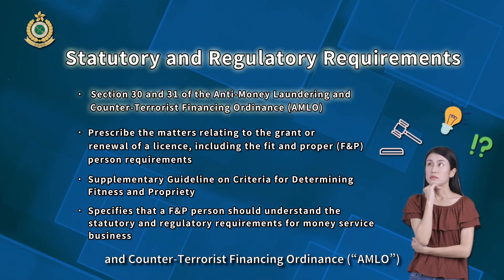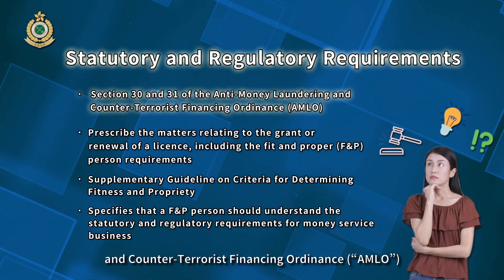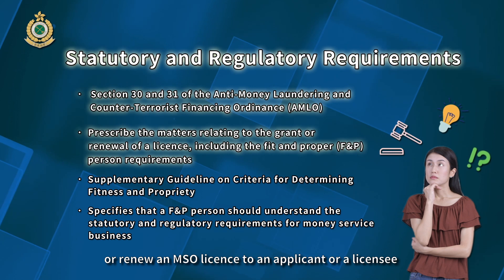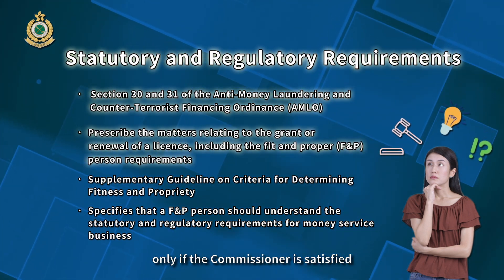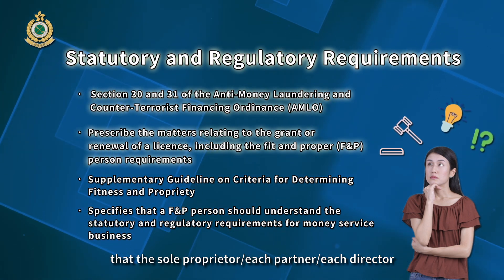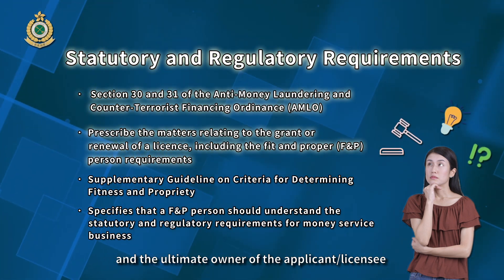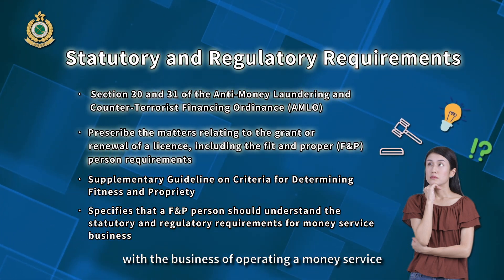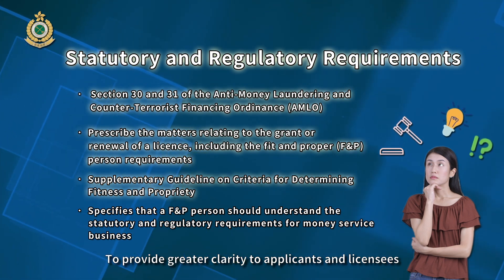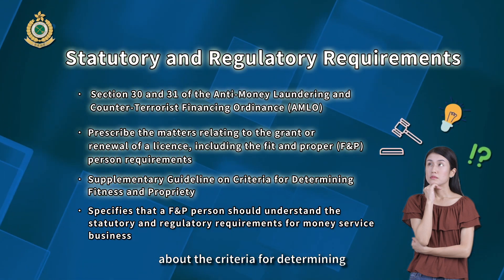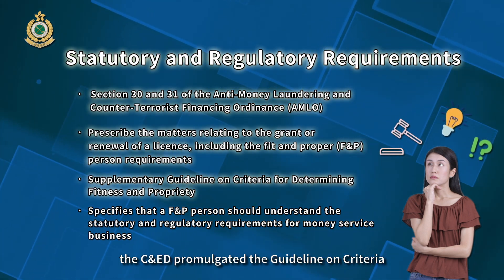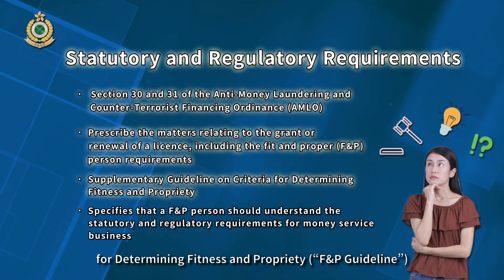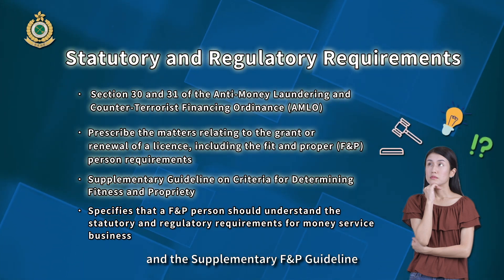Under the Anti-Money Laundering and Counter-Terrorist Financing Ordinance, the Commissioner of Customs and Excise may grant or renew an MSO license to an applicant or a licensee only if the Commissioner is satisfied that the sole proprietor, each partner, or each director, and the ultimate owner of the applicant or licensee is a fit and proper person to be associated with the business of operating a money service. To provide greater clarity, the CNED promulgated the guideline on criteria for determining fitness and propriety, the F&P guideline, and the supplementary F&P guideline.